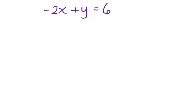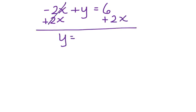We have negative 2x. We're going to add 2x to both sides so that we can get y alone. y equals 2x plus 6.